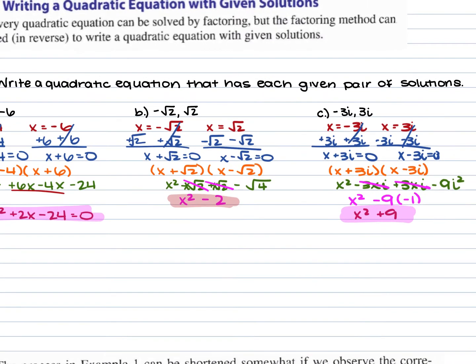With these problems, we're just working backwards. When given two terms and asked to write a quadratic equation, set them equal to x, move the term over, FOIL it out, and make sure your equation is set equal to 0.